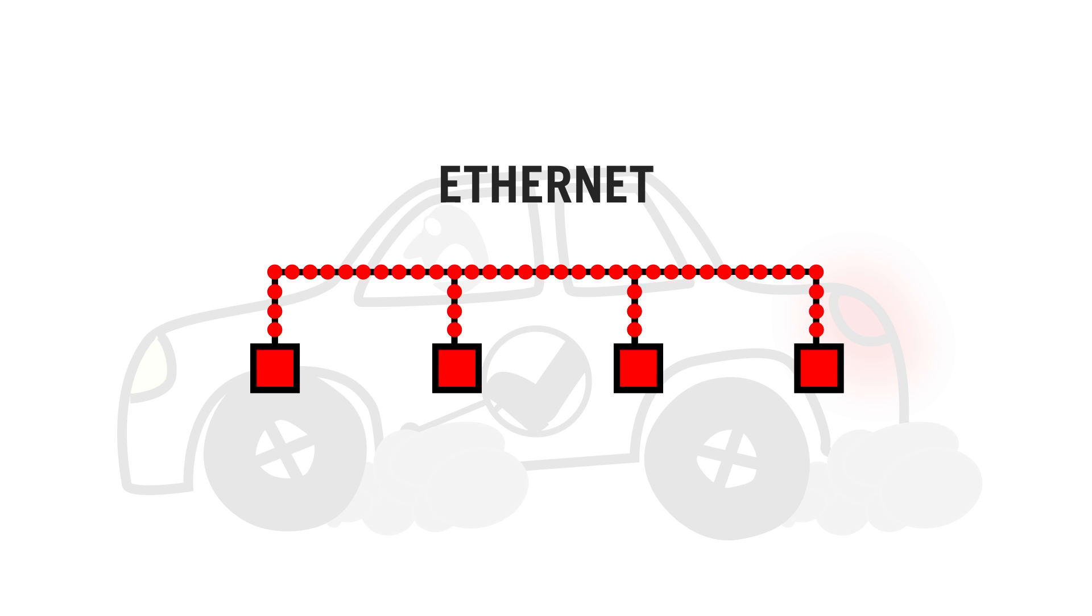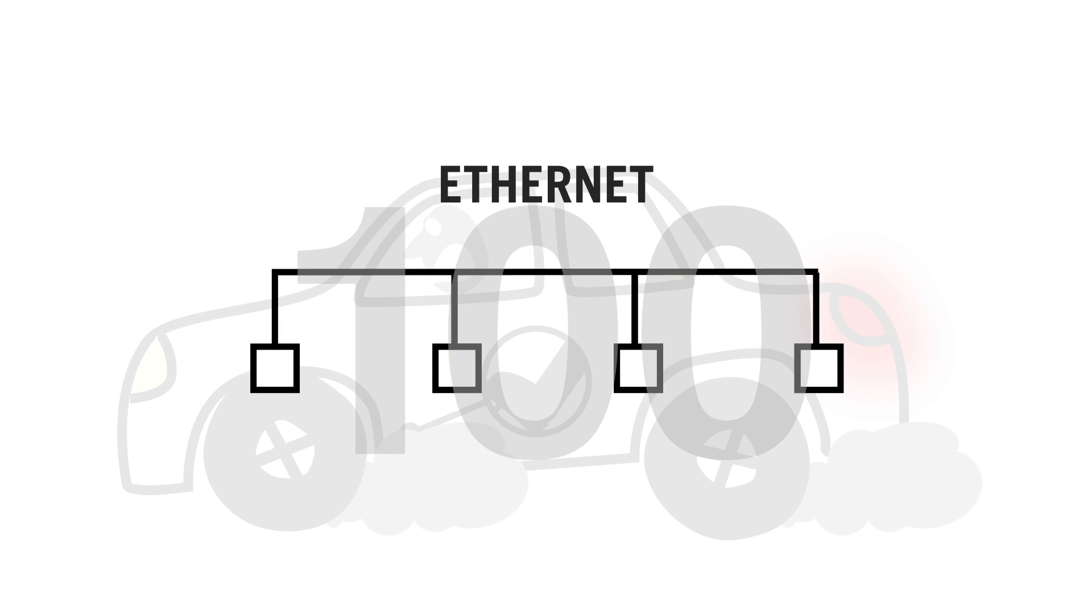By 1973, Ethernet was already running at 3 megabits per second. Today Ethernet supports speeds of 10, 100 and even 1000 megabits per second.